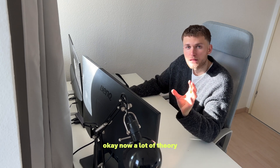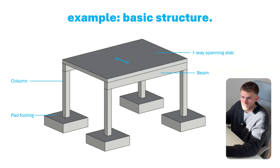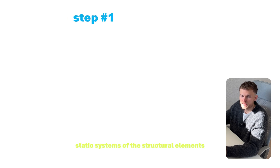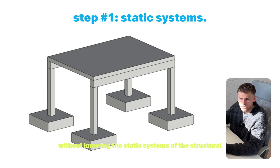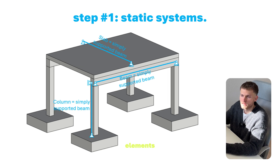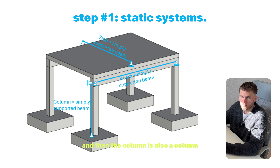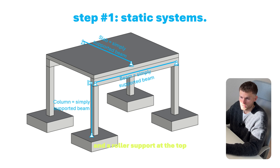Now let's run through an example. We use a basic structure to understand vertical load transfer from slabs to beams, then to columns, and then to point foundations. Step one: static systems of the structural elements. In this example our slab is a simply supported beam, the beam is a simply supported beam as well, and the column has a pin support at the bottom and a roller support at the top.